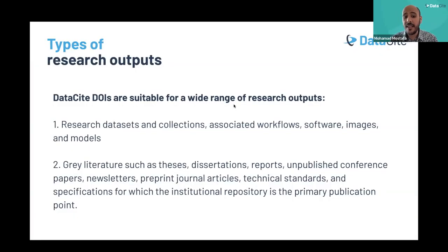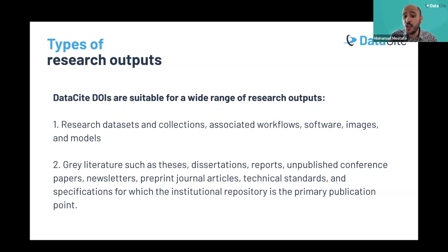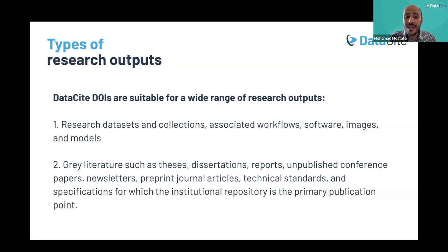DataCite DOIs are suitable for a wide range of research outputs. We have two main categories: the first includes research datasets, collections, associated workflows, software, images, samples, models, and protocols. The second layer — which we call grey literature — includes theses, dissertations, reports, newsletters, and unpublished conference papers, which are usually stored inside an institutional repository.